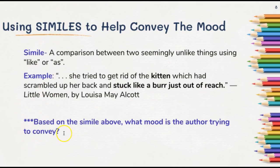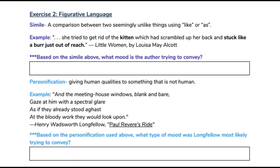There's a question on your handout: based on the simile above, what mood is the author trying to convey? Take a minute and take a stab at what you think the mood of that example is — pause the video and try it on your own. The mood for this example may be agitated or annoyed, because it describes the kitten as if it were a bird just out of reach — something pesky and annoying that you couldn't quite reach.